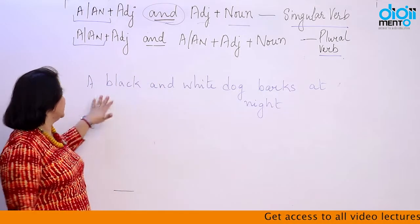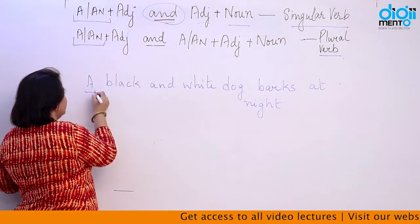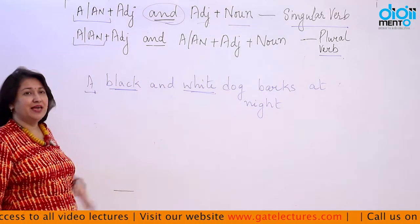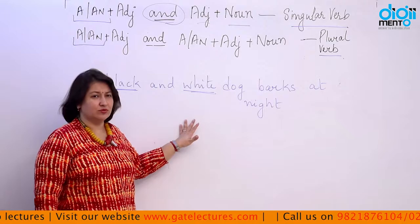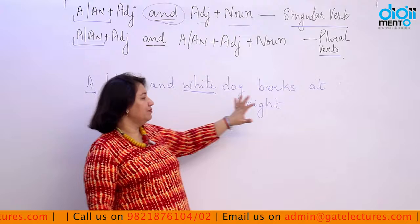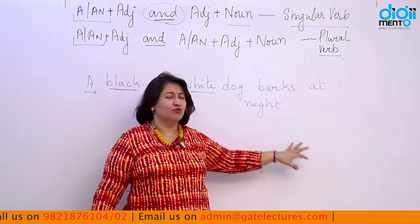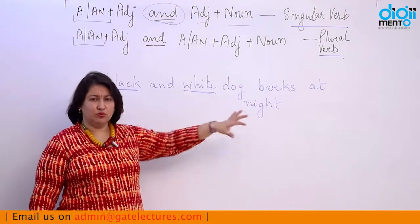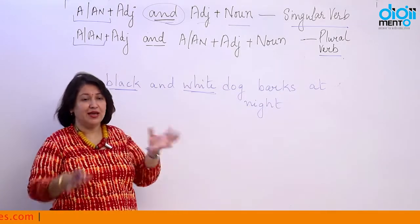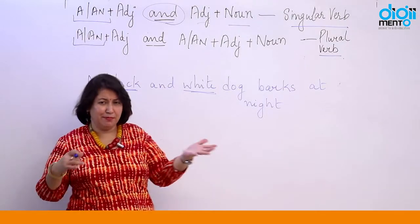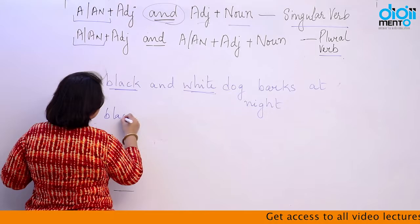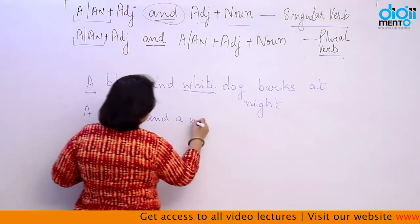For example: 'A black and white dog barks at night.' Here 'a' is used once, with both adjectives 'black' and 'white.' This means there is one dog that is black and white in color — ek kala aur safed kuta — and it barks every night. So here we are talking about one singular subject, and the verb 'barks' is singular.